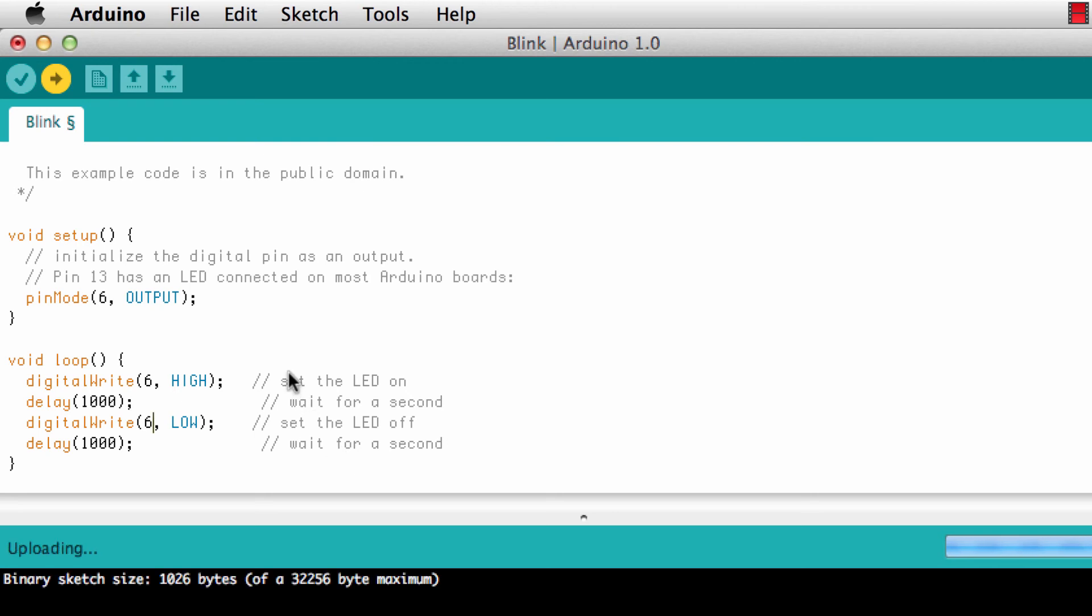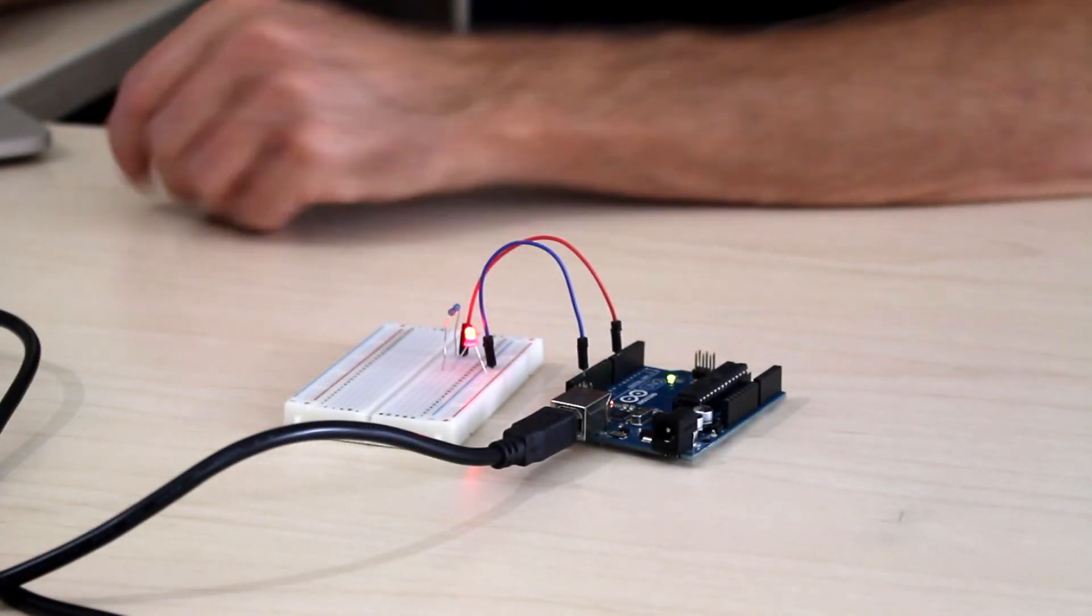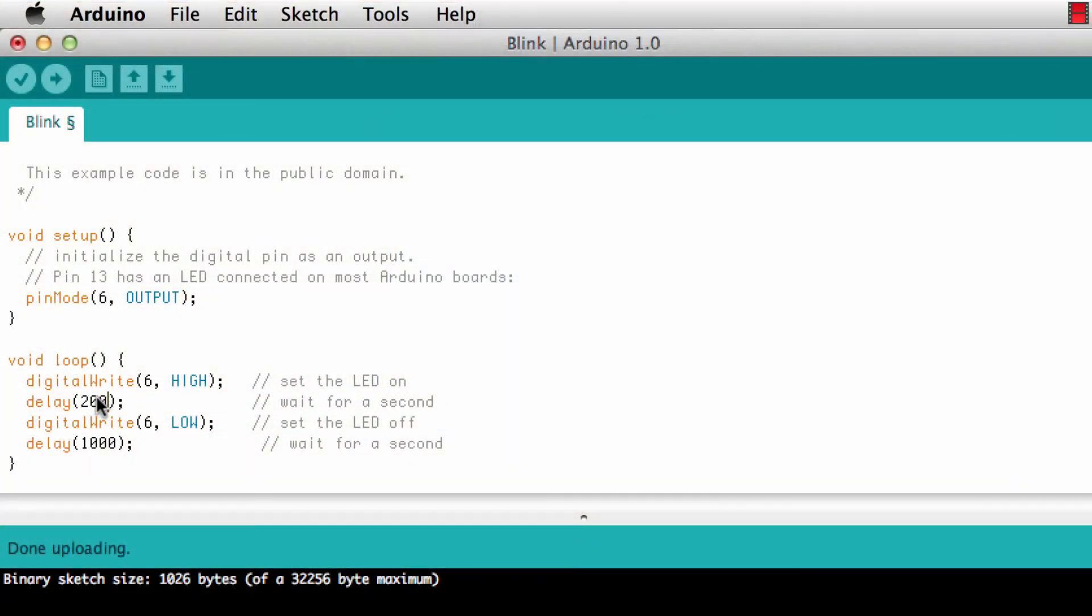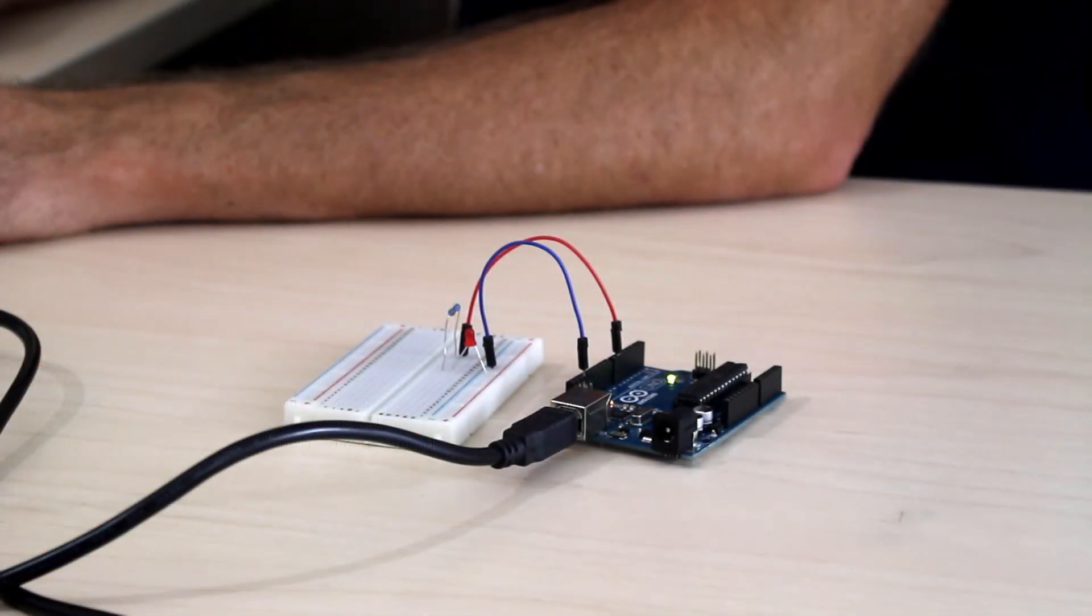Let's upload this and see if the LED really starts blinking. Compiling, uploading, you see it blink here. And here we have a blinking LED. If you want to play a little bit more with this, you can just change this delay. Let's put 200 milliseconds in there and upload this again. And now we get a much faster blinking LED.